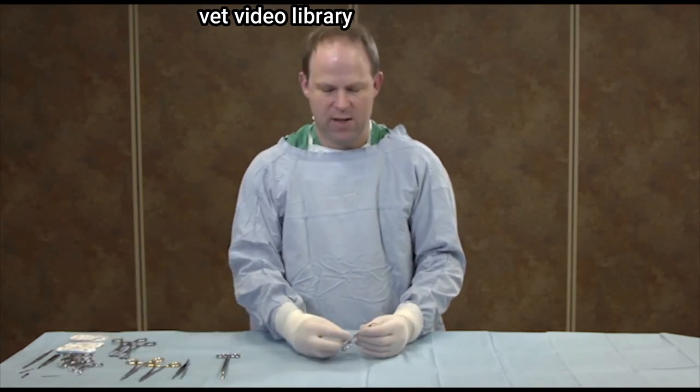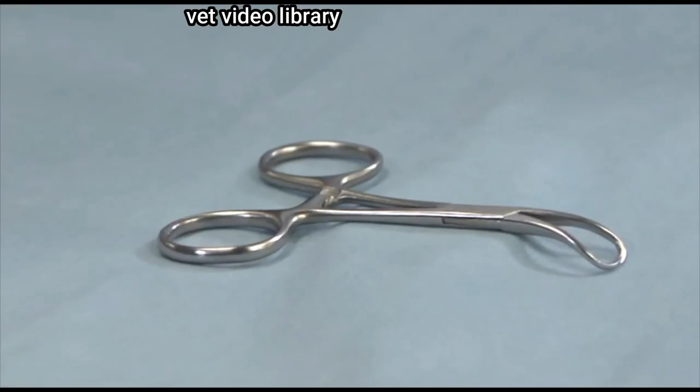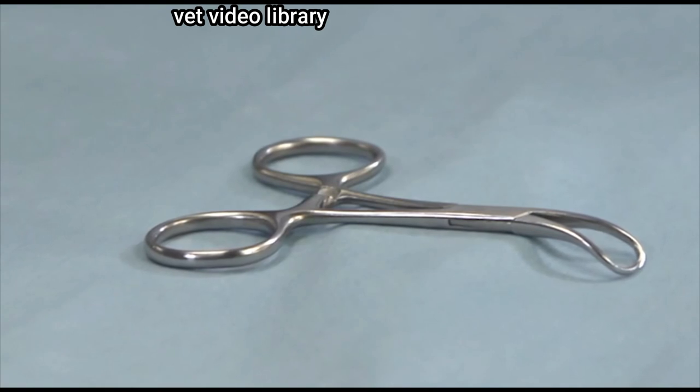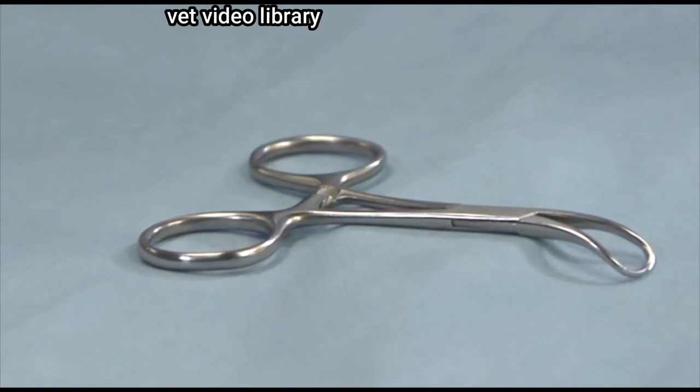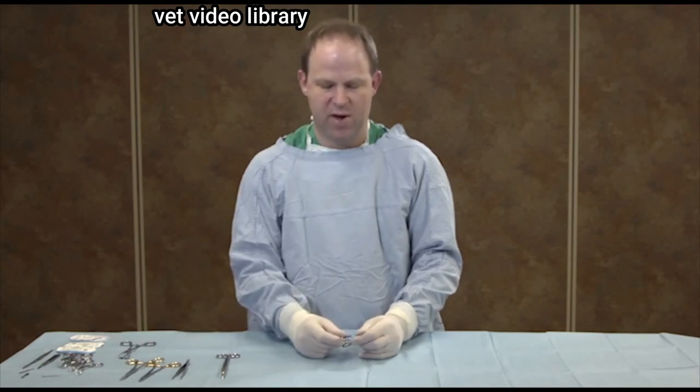We also have towel clamps. These towel clamps are used to secure drapes to patients' tissue, usually skin. And these are penetrating because they have the sharp points. We also have non-penetrating.